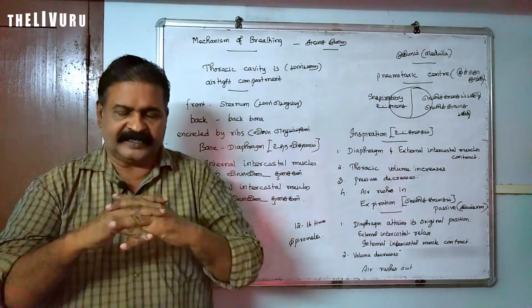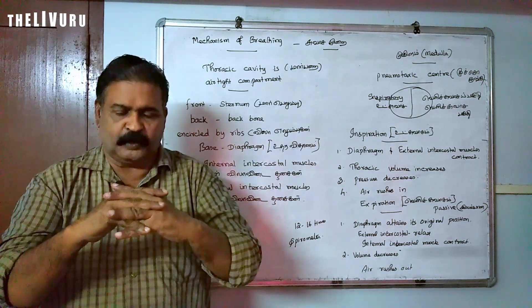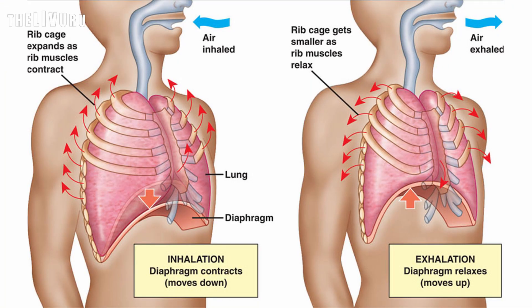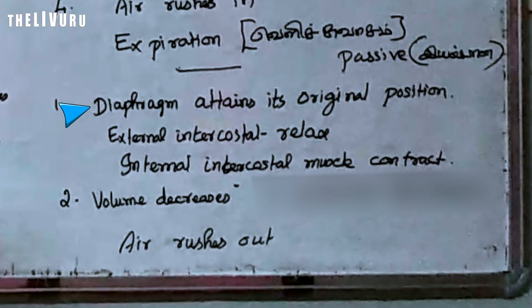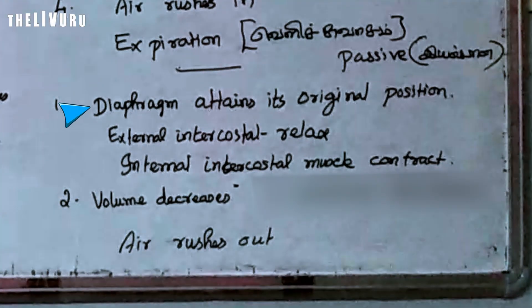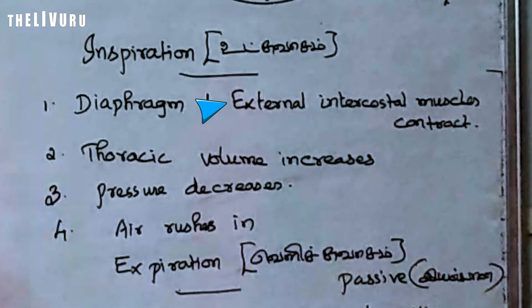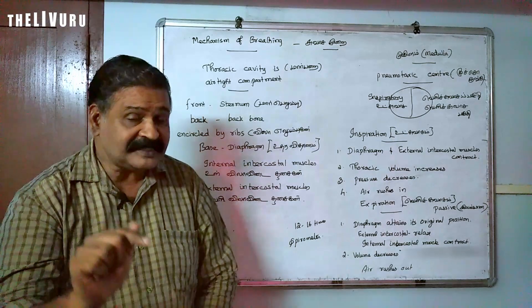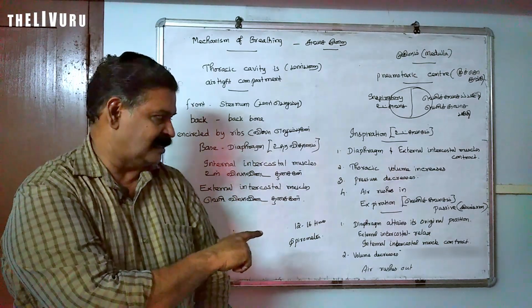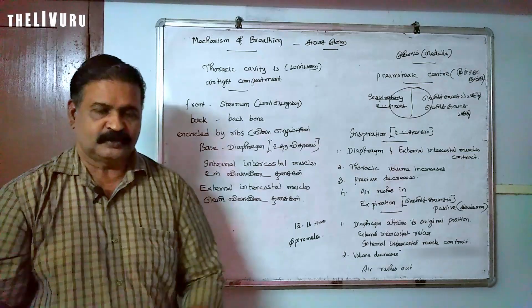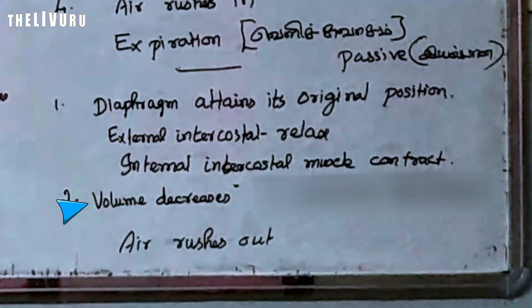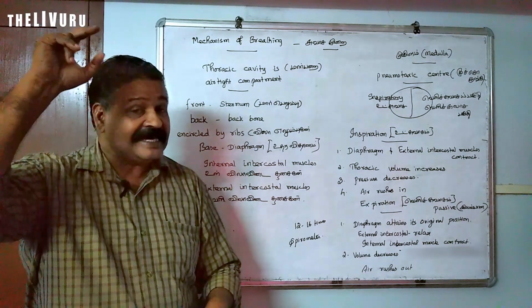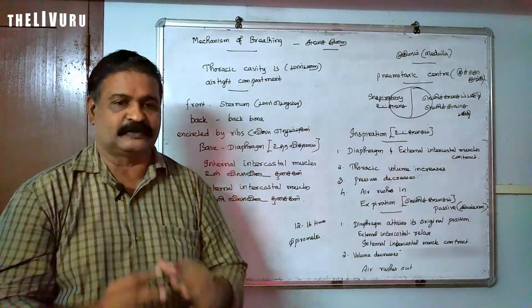Now the diaphragm attains its original dome shape position. The external intercostal muscles relax. The internal intercostal muscles are now working. The thoracic volume decreases. When the thoracic volume decreases, the pressure inside the thoracic cavity increases, and air is expelled out. That is expiration.